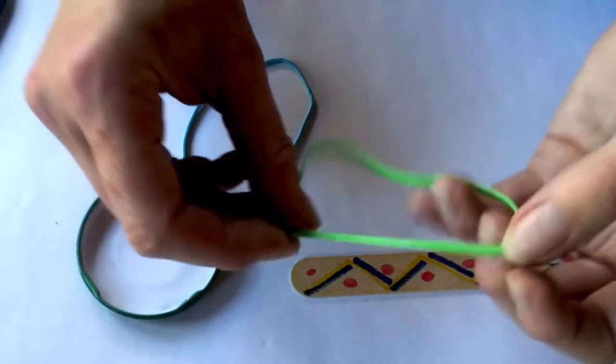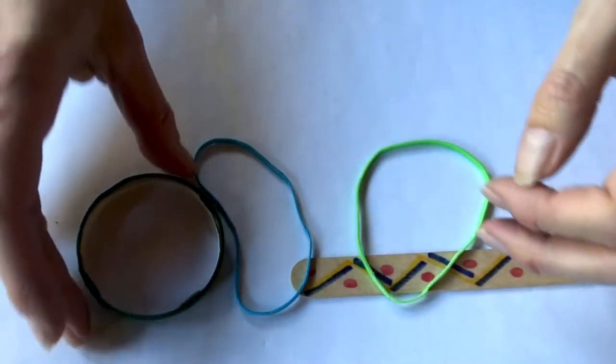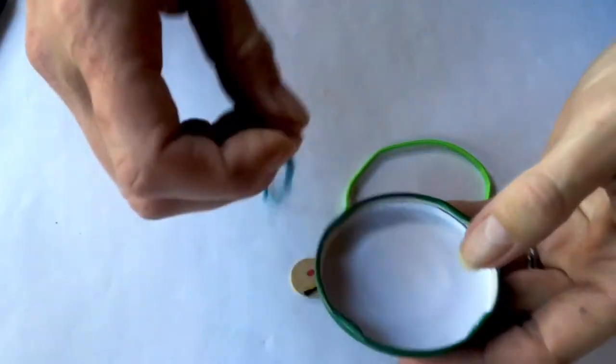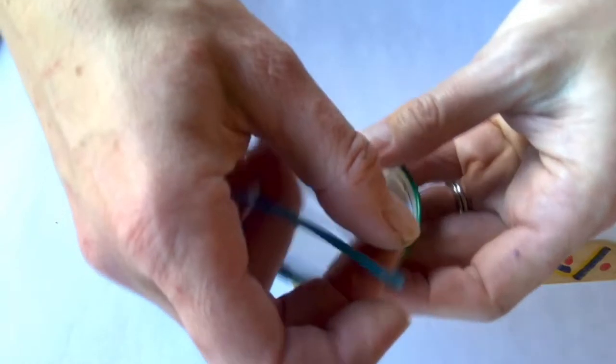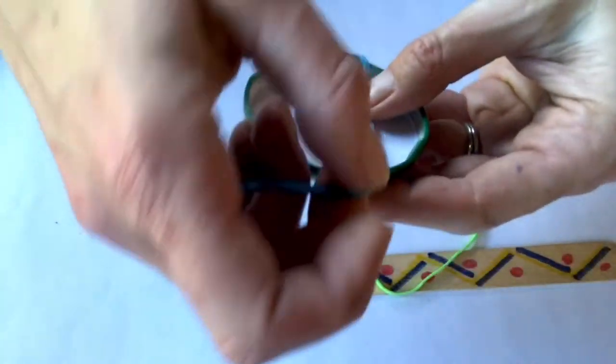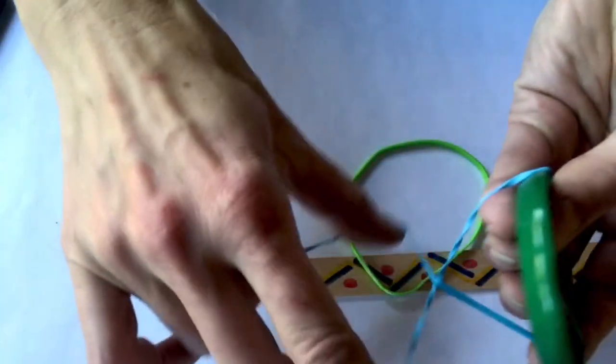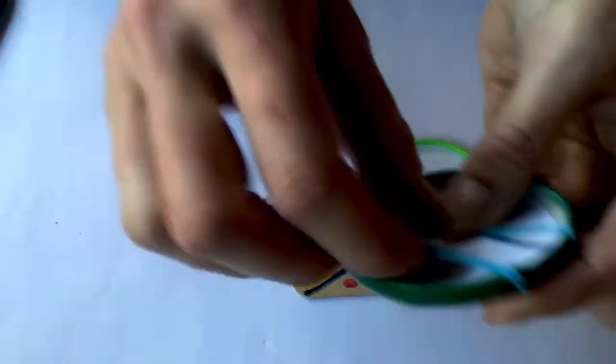Next, take your two elastic bands. You can have different colors if you like. What you're going to do is twist and turn the elastic band around the lid, tightening them as you go. I'm going to do this one three times just to get the tension right.